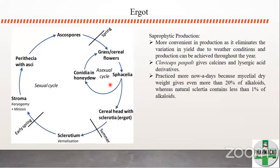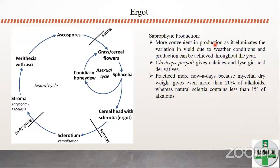In the asexual sphacelial stage, honeydew and conidiospores are formed. In summer, the sclerotium is collected. The sexual stage takes place in spring. If not collected, we get to the ascospore stage. Saprophytic production is more convenient as it eliminates variation due to weather conditions and production can be achieved throughout the year. Claviceps paspali gives calcines and lysergic acid derivatives; mycelial dry weight gives even more than 20 percent of alkaloids, whereas natural sclerotia contain less than one percent.